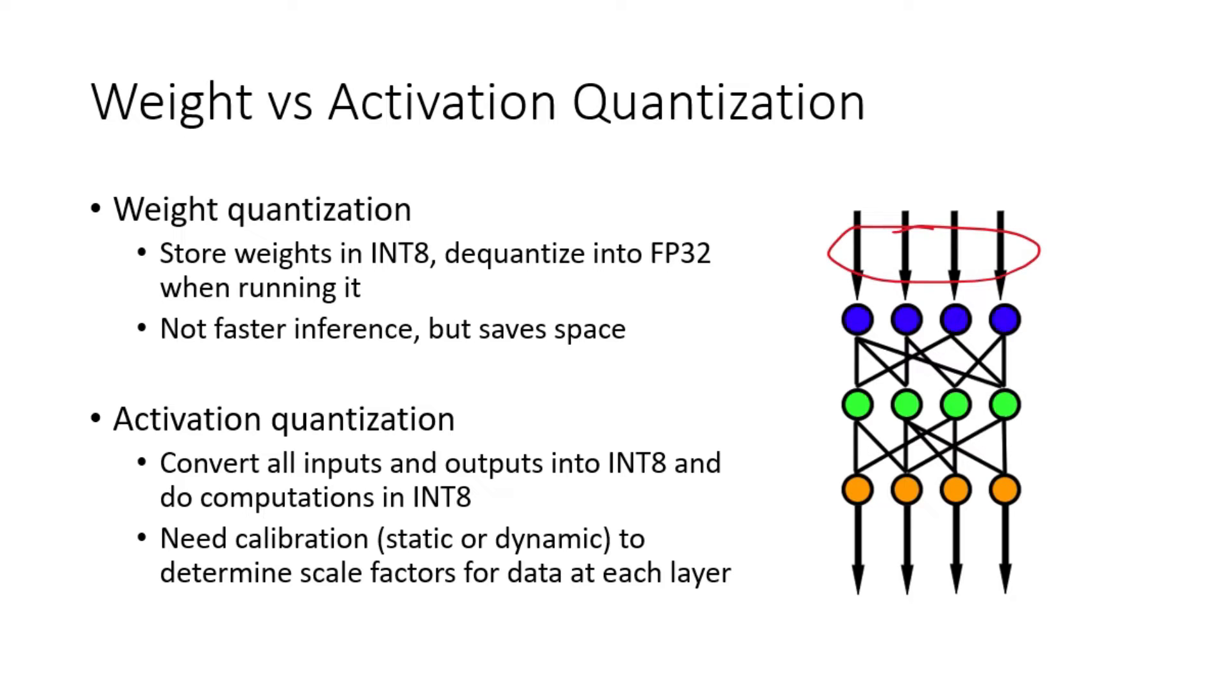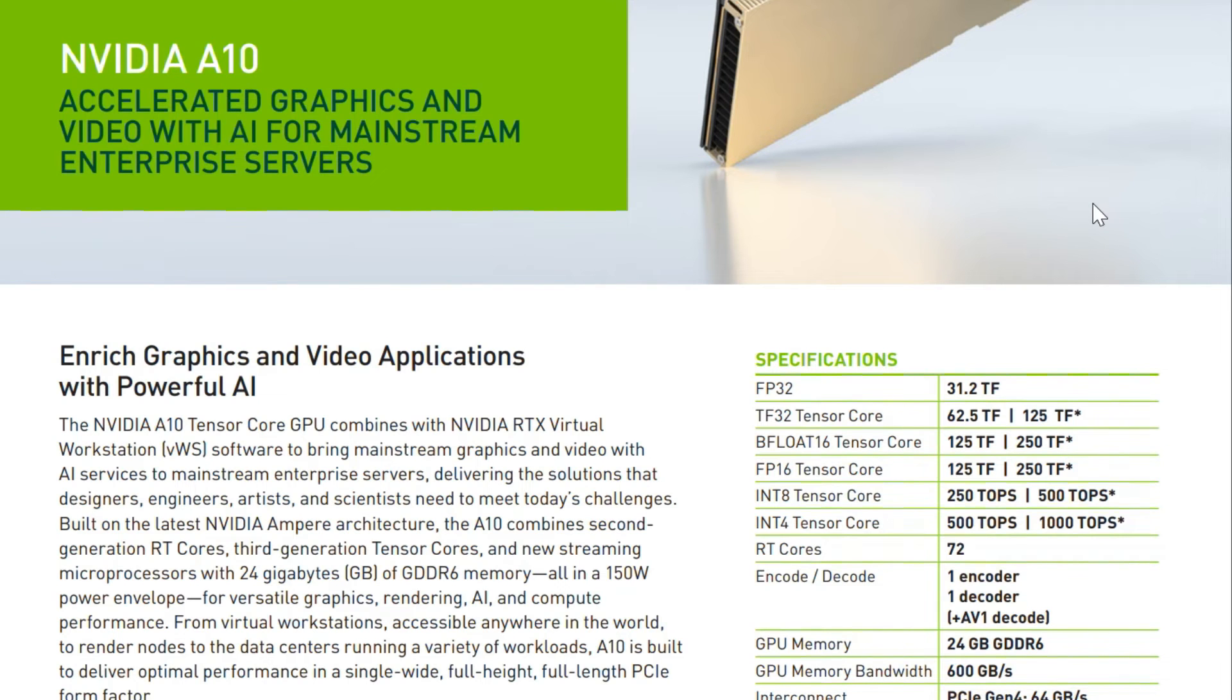If you ever come across the terms static or dynamic quantization, these refer to different ways of determining the scale factors of activations. If calibration is not done properly, you will encounter clipping in the network because the quantization is only able to handle floating points in a certain range, and anything outside of the range will clip to the max or min values. To determine which type of quantization to use, it helps to look at the specifications of the hardware that you intend to do the inference on.